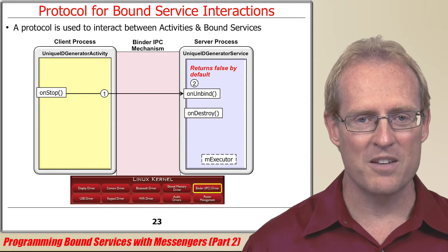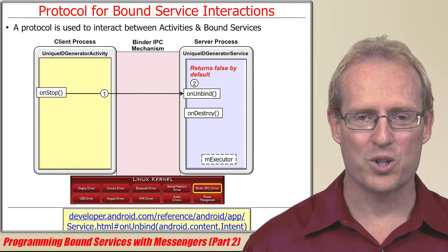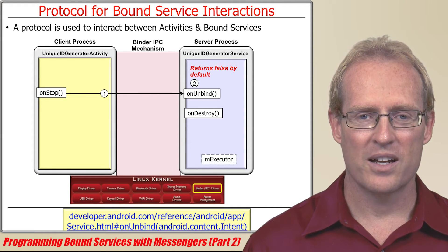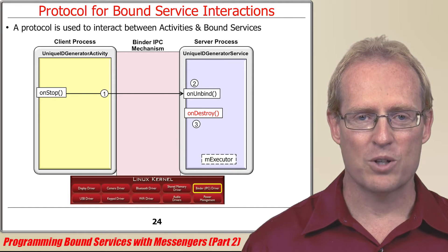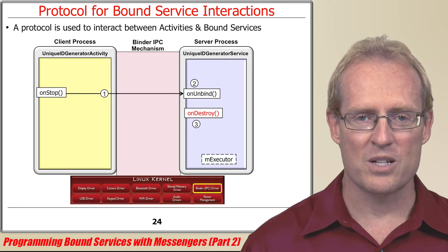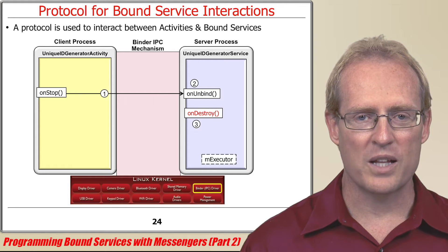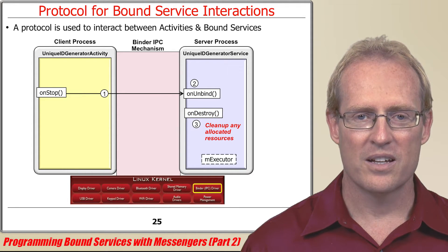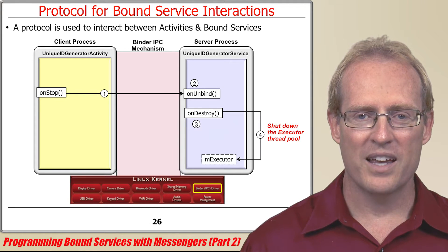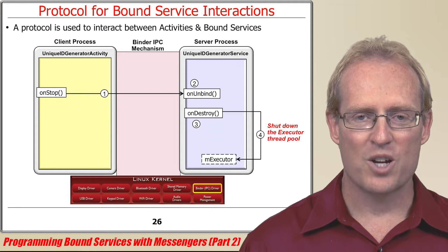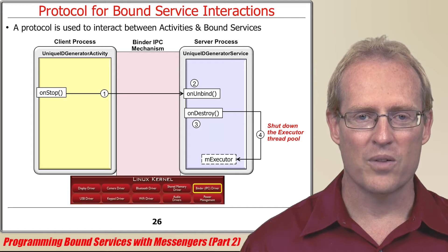The onUnbind hook method returns false by default. After a service's onUnbind returns false, the Android service framework dispatches its onDestroy hook method, which cleans up any allocated resources. For example, the onDestroy hook method in the unique ID generator service shuts down the executor thread pool.